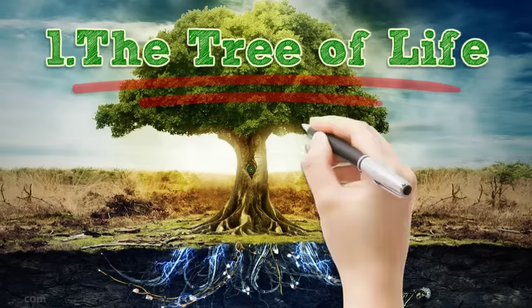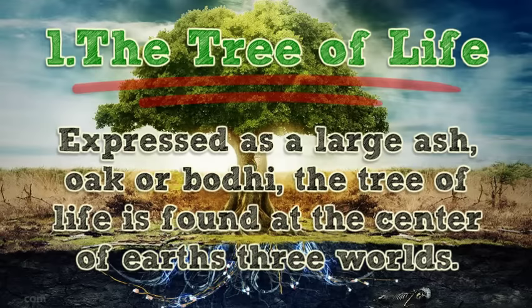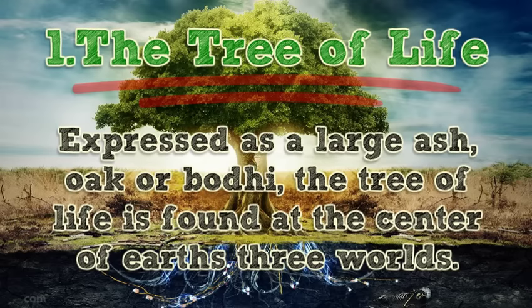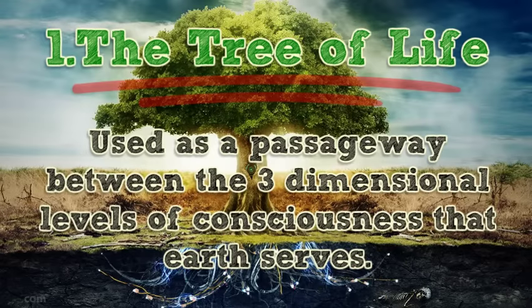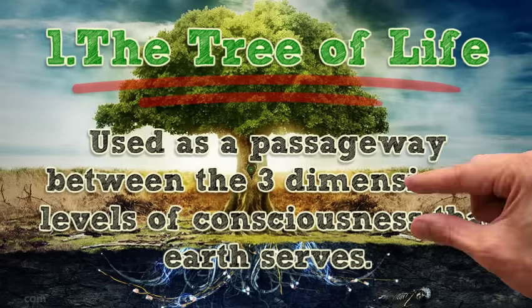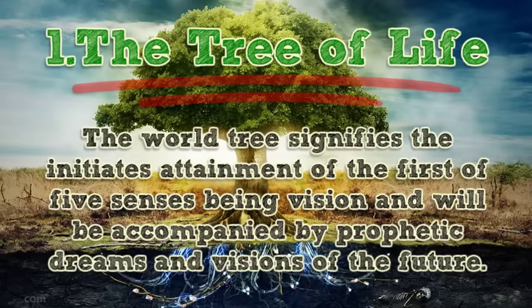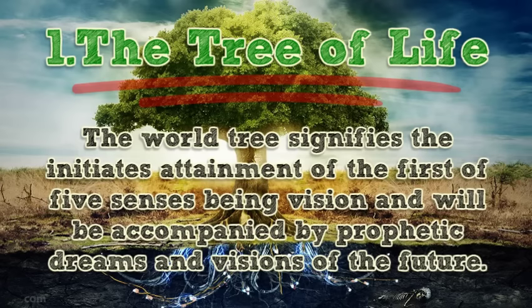1. The tree of life, expressed as a large ash, oak, or body, is found at the center of Earth's three worlds. Used as a passageway between the three-dimensional levels of consciousness that Earth serves. The world tree signifies the initiate's attainment of the first of five senses — being vision — and will be accompanied by prophetic dreams and visions of the future.